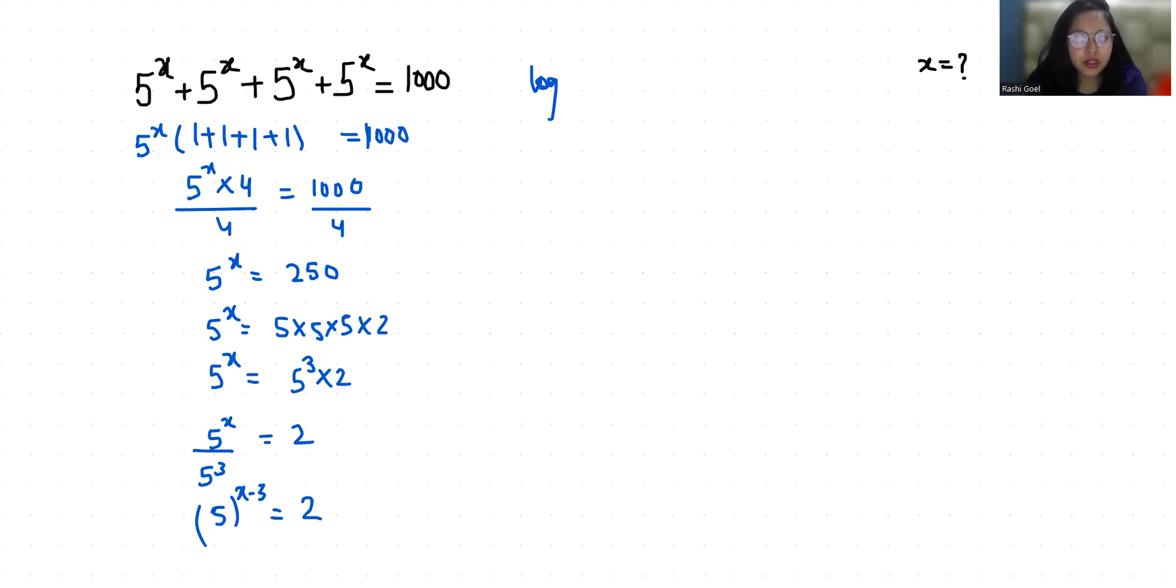So (x - 3) log 5 equals log 2. Now I'm going to divide both sides by log 5, so x - 3 equals log 2 with base 5.